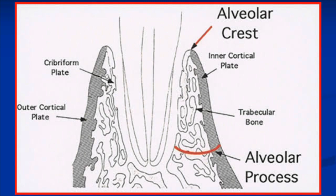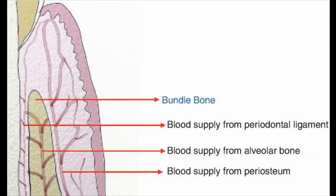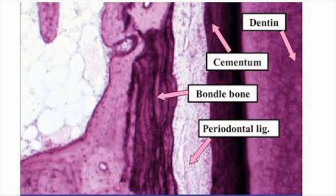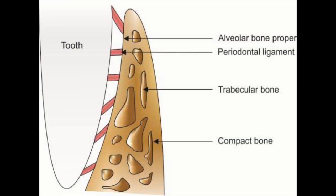This perforated layer is known as the cribriform plate. The alveolar crest is the region where the cortical plate and the cribriform plate meet. The portion of the alveolar bone that actually supports the tooth is known as the bundle bone — the innermost lining of the alveolar bone. Under a microscope it appears to have fiber bundles running across it; these fibers connect the alveolar bone to the cementum of the tooth. The regions of these fibers embedded within the bone and cementum are mineralized and are known as Sharpey's fibers.